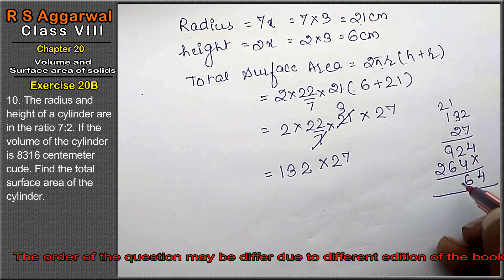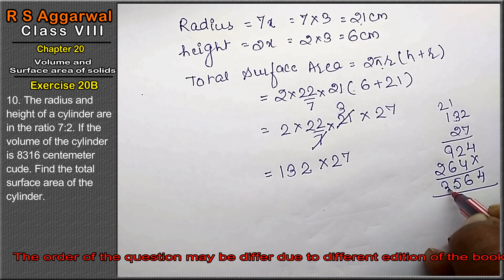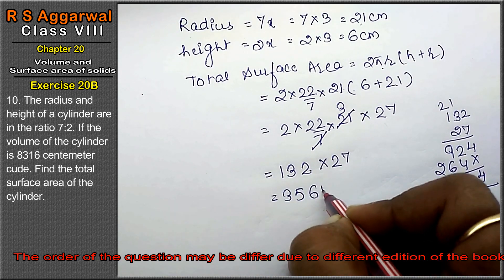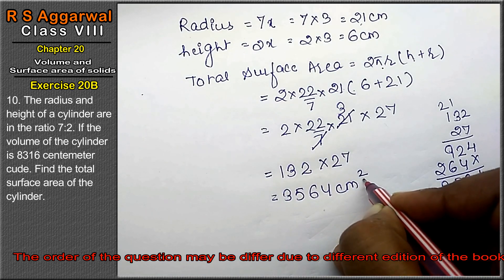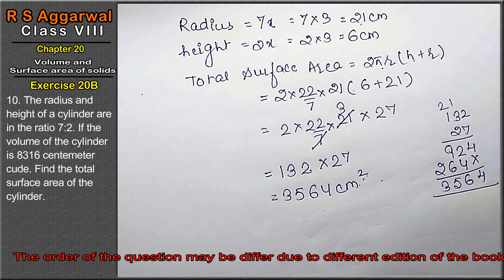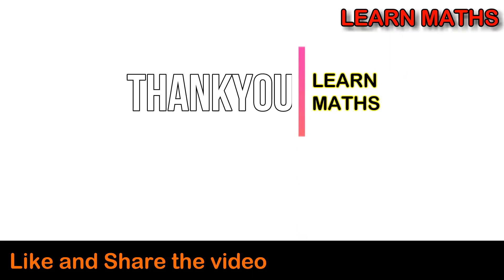132 into 27, multiply. So this is 7 times 2 is 14, 7 times 3 is 21, 22, 7 times 1 is 7, 9, 2 times 2 is 4, 2 times 3 is 6, 2 times 1 is 2. So this is 4, 6, 9 plus 6 is 15 and 3, that is 3564 cm². Total surface area unit is square cm². This is the answer.